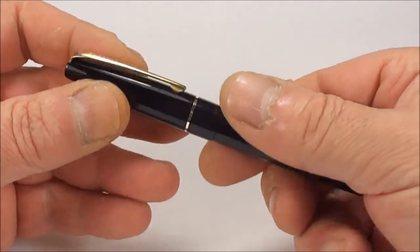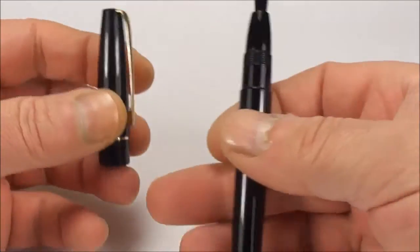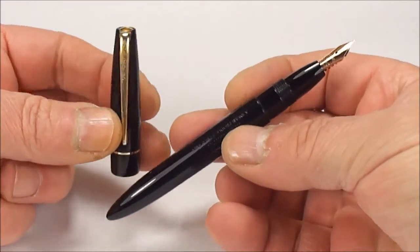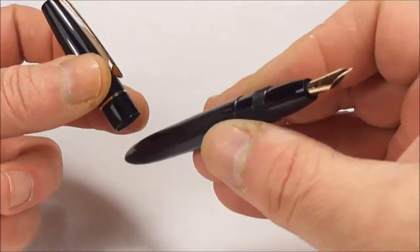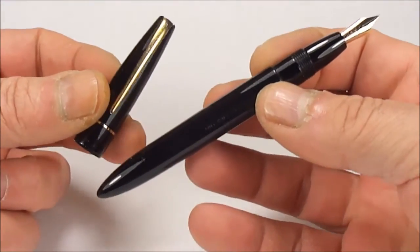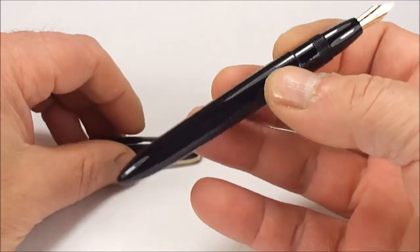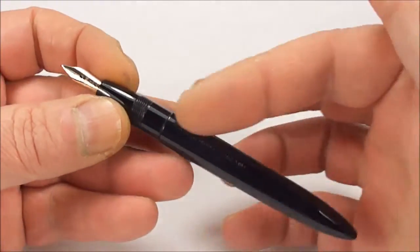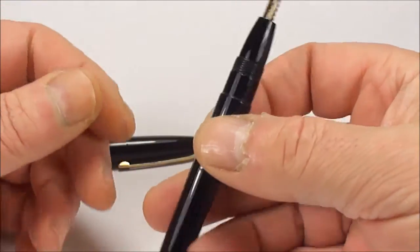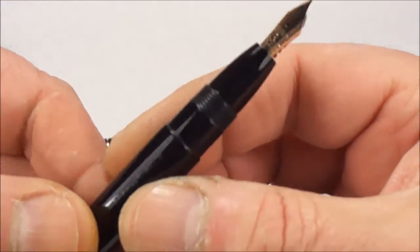Now first of all let's take off the cap, which unscrews. Let's give you a twirl. A very nice pen if I may say so myself. As I say, very underrated. I've actually restored this particular one, we've put a new sack in it so we'll show you it working in a moment.